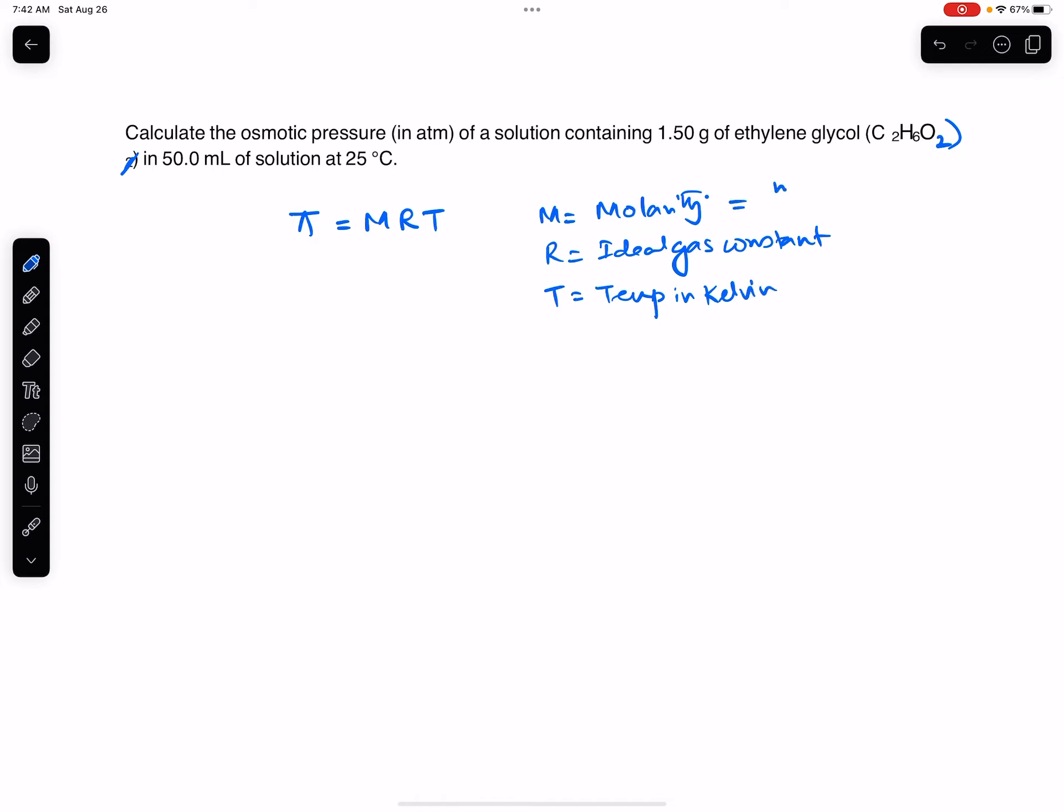So molarity is given by moles per liter, ideal gas constant you can pull from a table, which is 0.08206 liter atmosphere over Kelvin times moles. And temperature in Kelvin should be equal to 273.15 plus the temperature given to us, which is 25 degrees Celsius, which is equal to 298 Kelvin.